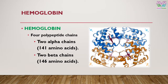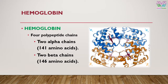Both sickle cell disease and thalassemia have a defective hemoglobin, so we have to first discuss a bit about hemoglobin. Hemoglobin is a protein having four polypeptide chains — two are alpha chains each having 141 amino acids, whereas the other two are beta chains each having 146 amino acids. These four chains combine with each other to form a protein with four polypeptide chains.